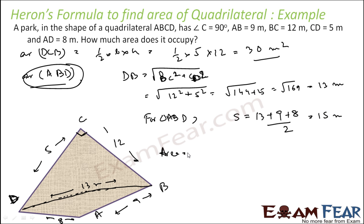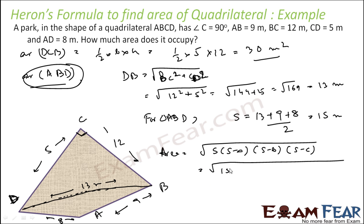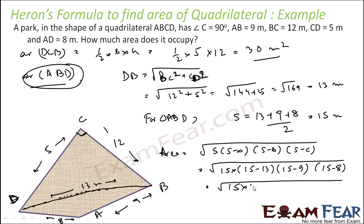The area is root of S(S minus A)(S minus B)(S minus C) per Heron's formula. S is 15. S minus 13 equals 2, S minus 9 equals 6, S minus 8 equals 7. So we get root of 15 times 2 times 6 times 7, which gives 6 root 35, that is approximately 35.5 meter square.